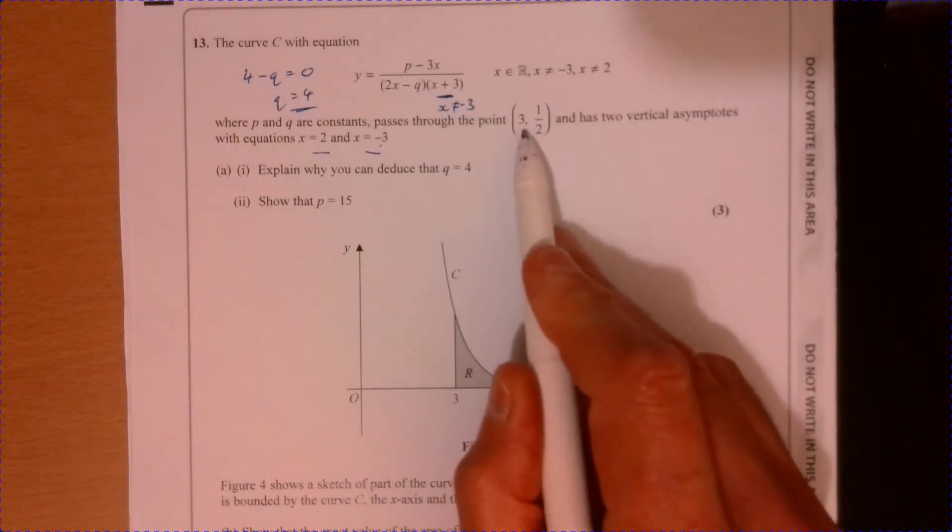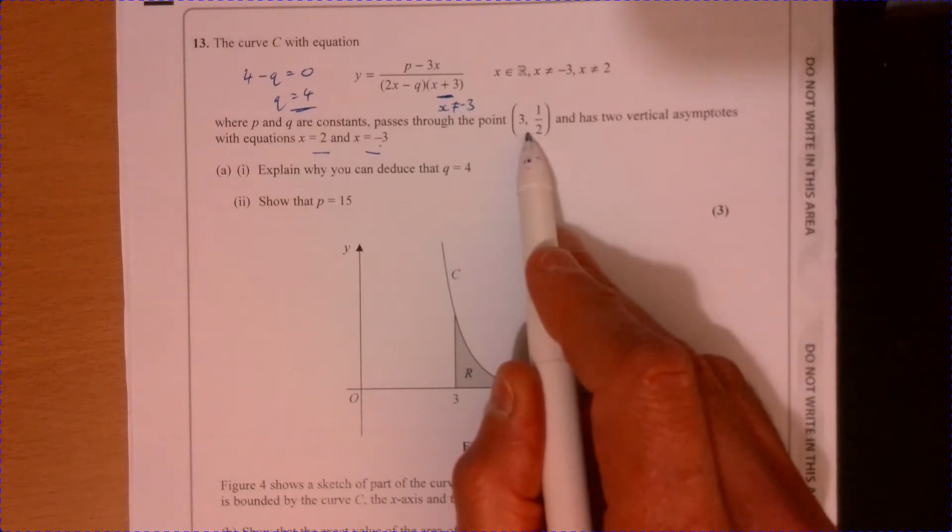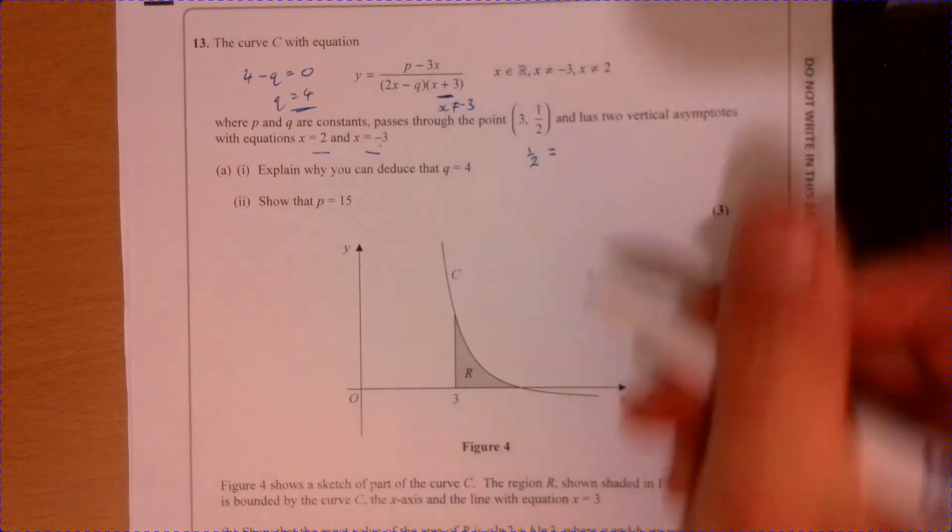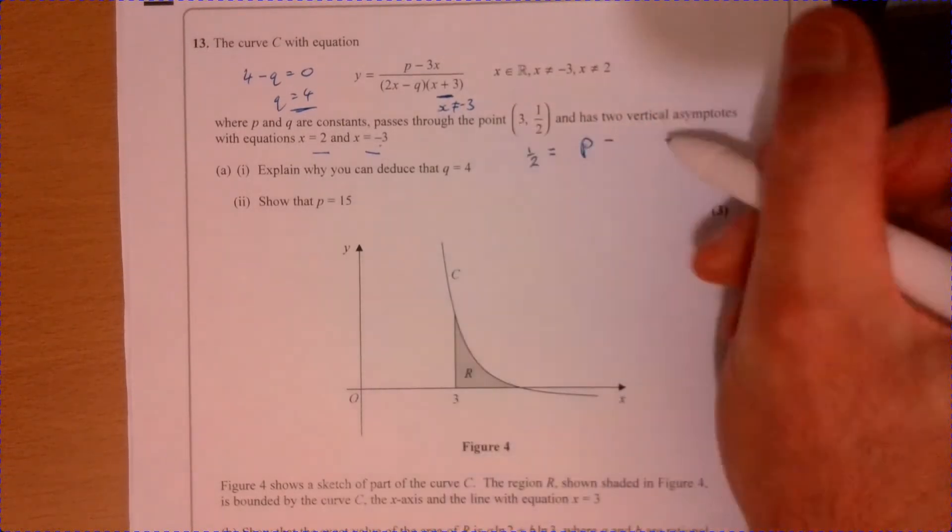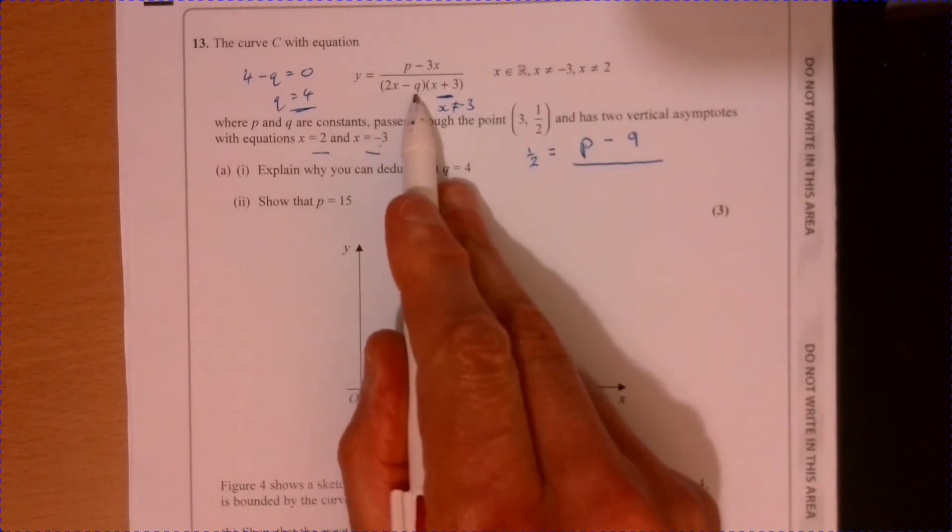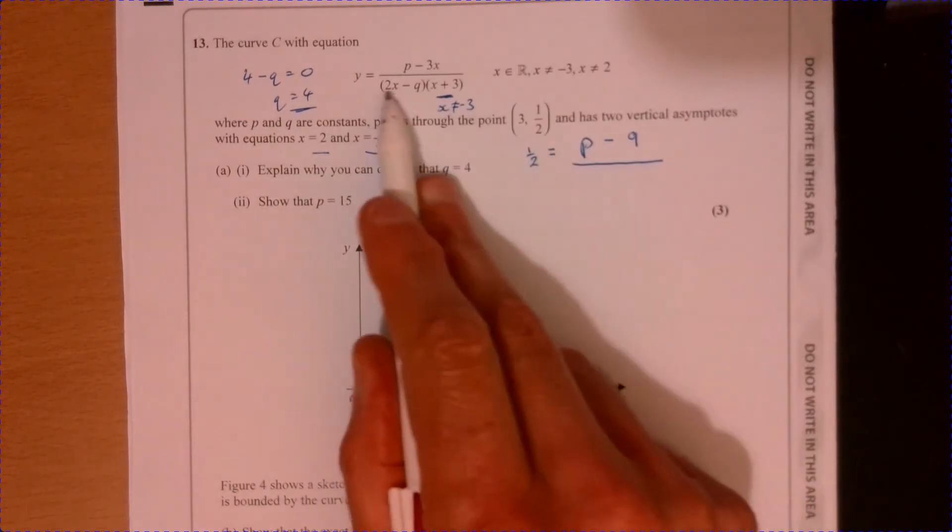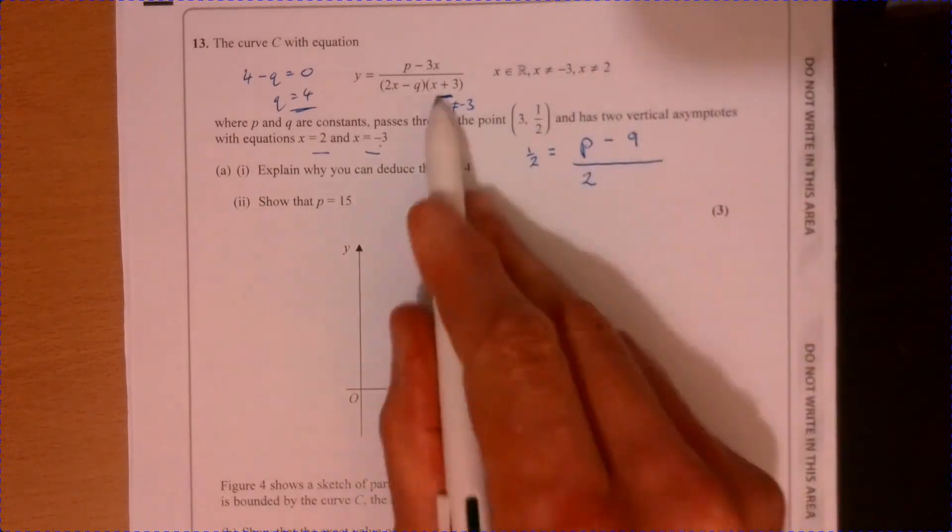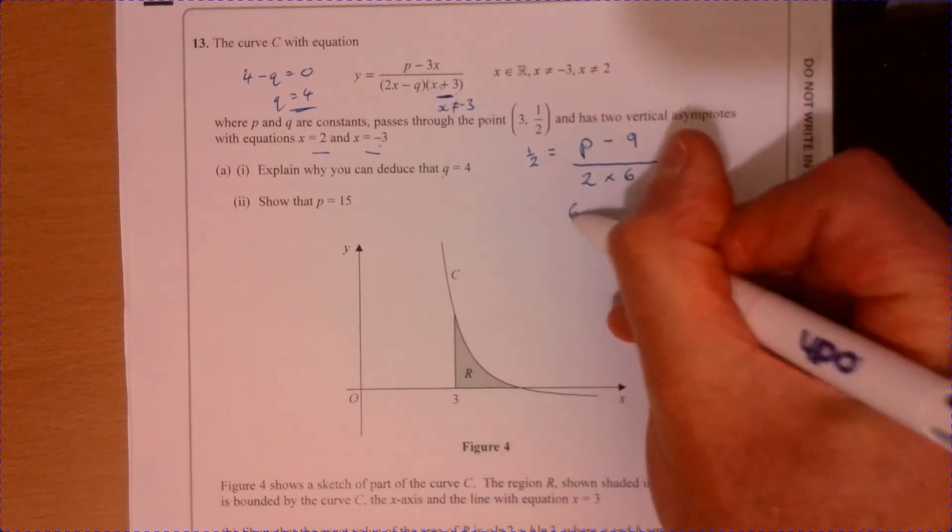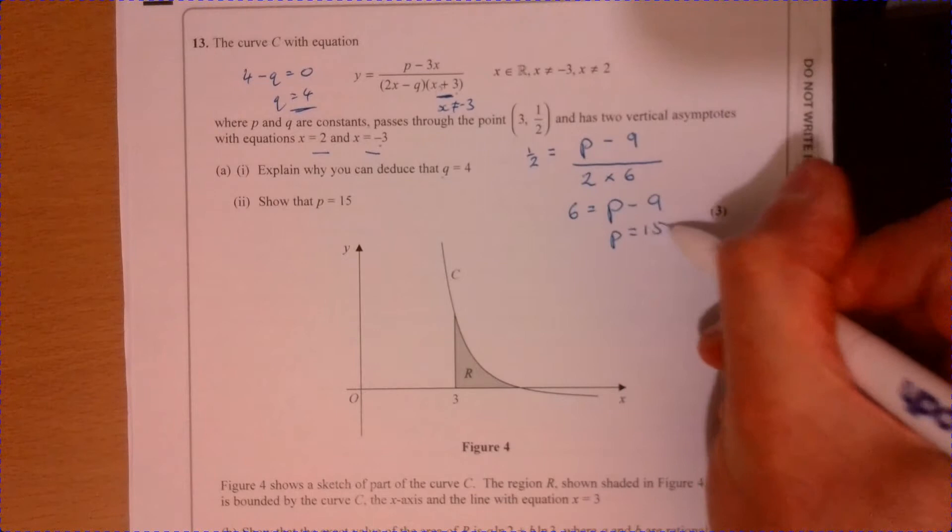Now to get the other point, we need to think of using this coordinate that we know lies on the line. So if we put in 3 for x and a half for y, we know a half equals p take away 3 times 3, which is 9, and then we've got 2x minus 4. Remember, that's 4. So 2 times 3 minus 4, so that's 2. And then 3 add 3 is going to be 6. So multiply both sides by 12. That gives us 6 equals p take away 9. Add 9 to both sides, and p equals 15.